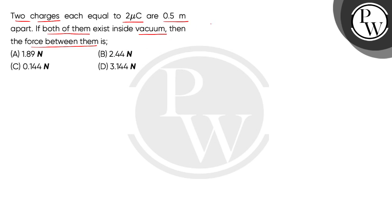So guys, given we have two charges, in which both the magnitudes are 2 micro coulomb each. It means 2 multiplied by 10 to the power minus 6 coulomb. And the distance between them center to center is 0.5 meter.